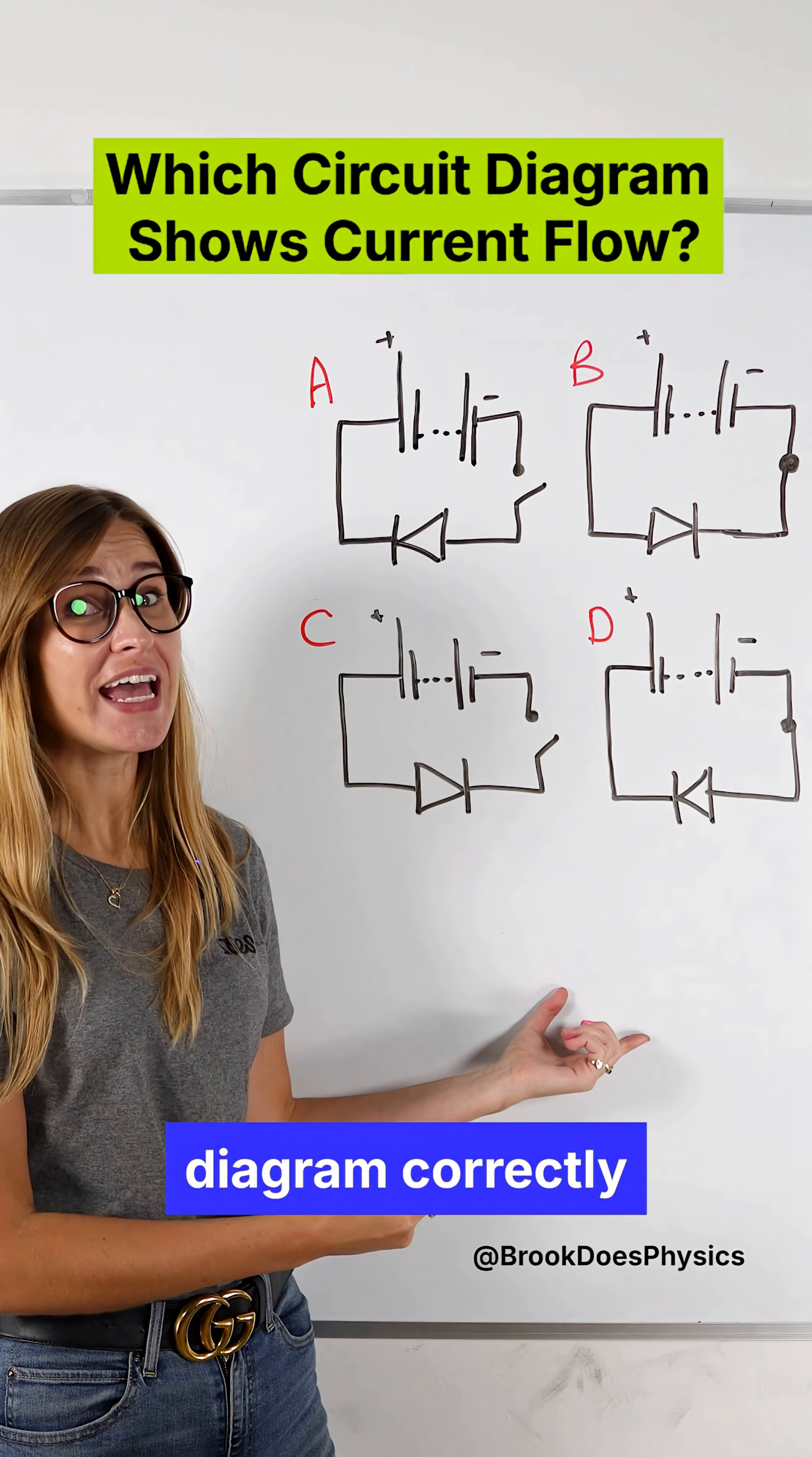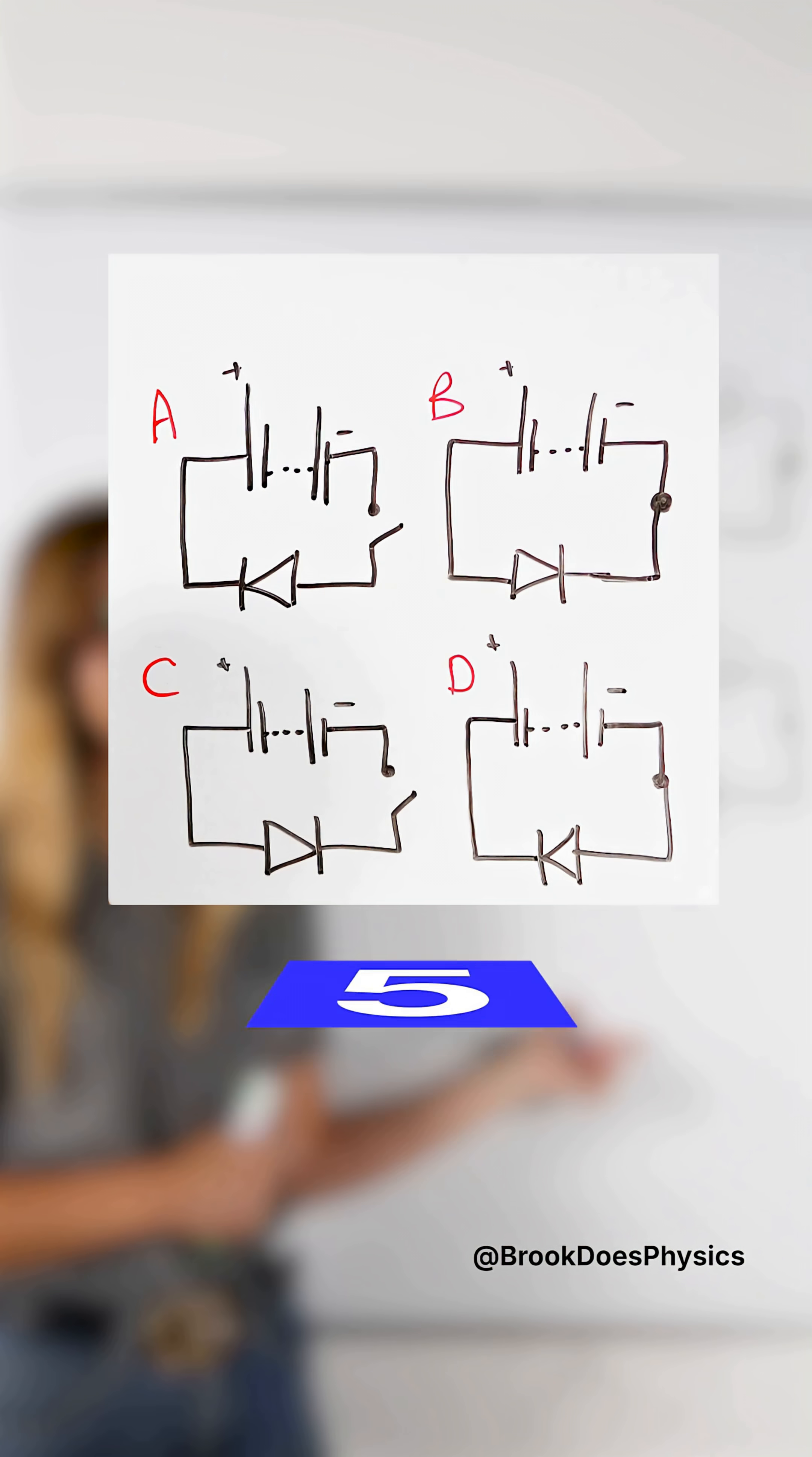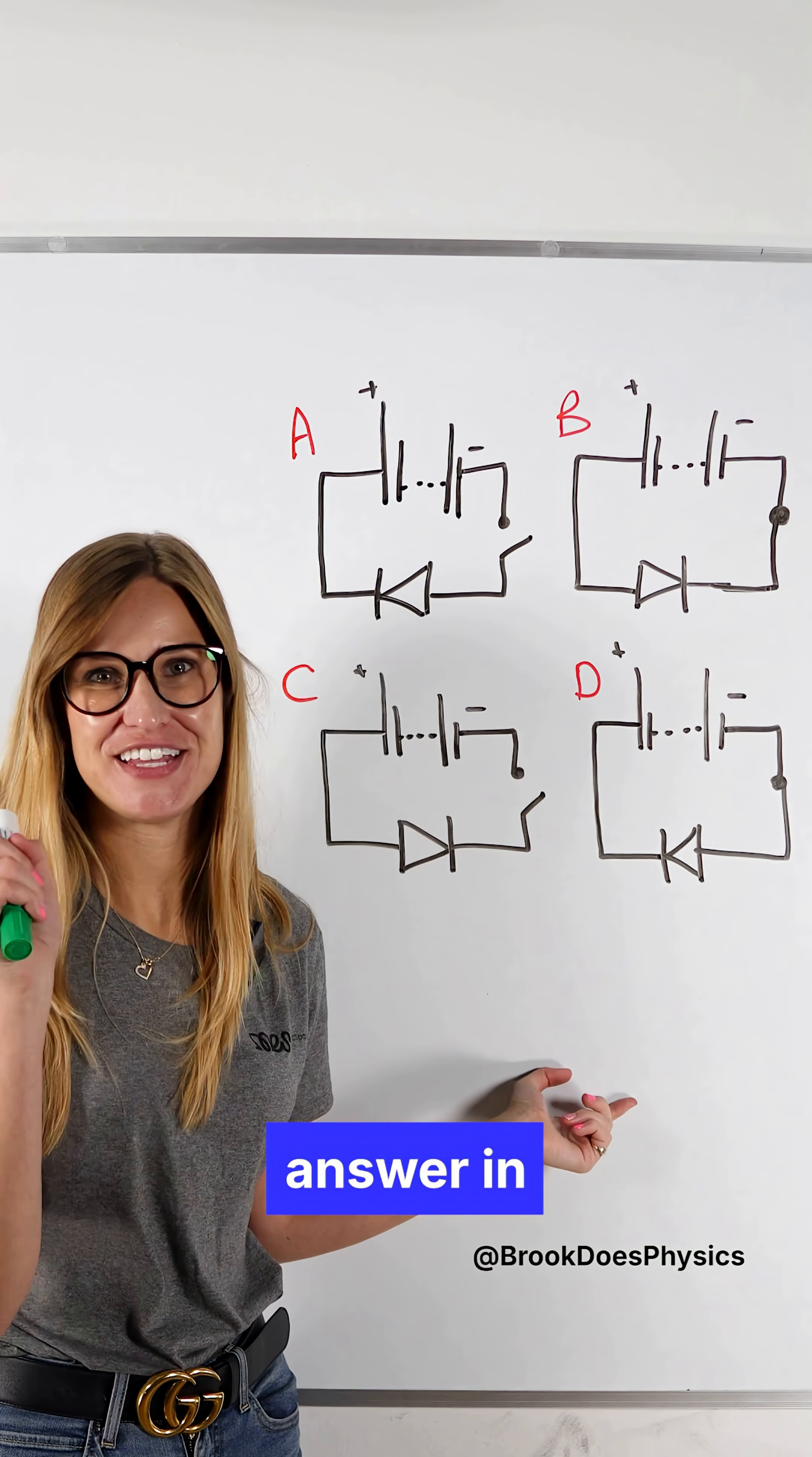Which circuit diagram correctly represents a circuit that has current flowing through it? Pop your answer in the chat below.